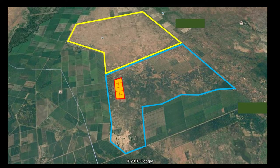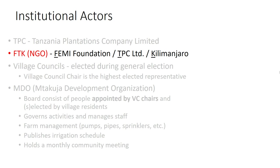The red square is where the farm is located within these two communities. The institutional actors — there are a few. I want to start with FTK, a local NGO which received support from Femi Foundation in the Netherlands and the sugarcane farm. They are instrumental in the setup of this farm. They've been doing work in these communities for a long time in terms of healthcare, education, economic opportunities, and found that food security was critical.